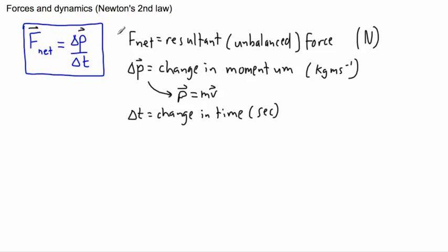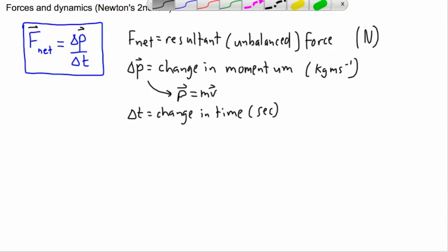So F_net equals Δp/Δt — that's Newton's second law. What this tells you is that if you have a resultant force, you're going to have a change in momentum, which means a force can cause a change in speed or velocity. This is why forces are all about applying a change in velocity.